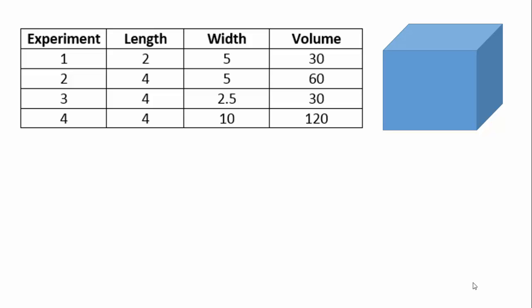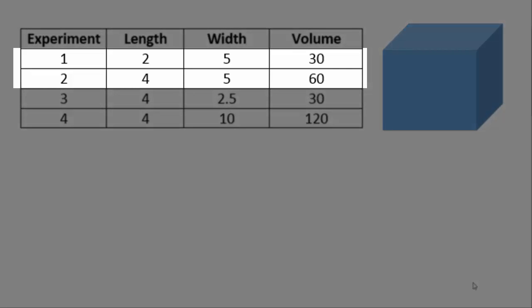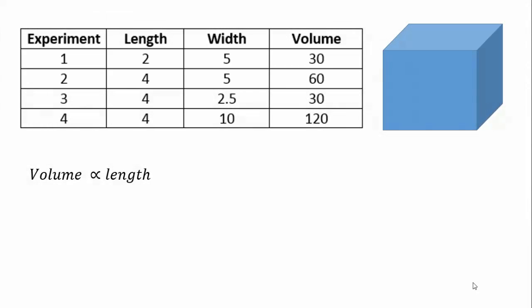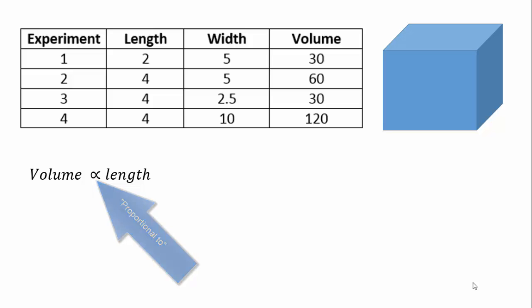Looking through the data, you can see some relationships. In experiments 1 and 2, the width was held constant but the length was doubled, and the volume doubles also. So we can say the volume must be proportional to the length — you double the length, you double the volume. Note this is not the same as saying it's equal to the length. Rather, when we multiply the length by a factor, the volume gets multiplied by the same factor.